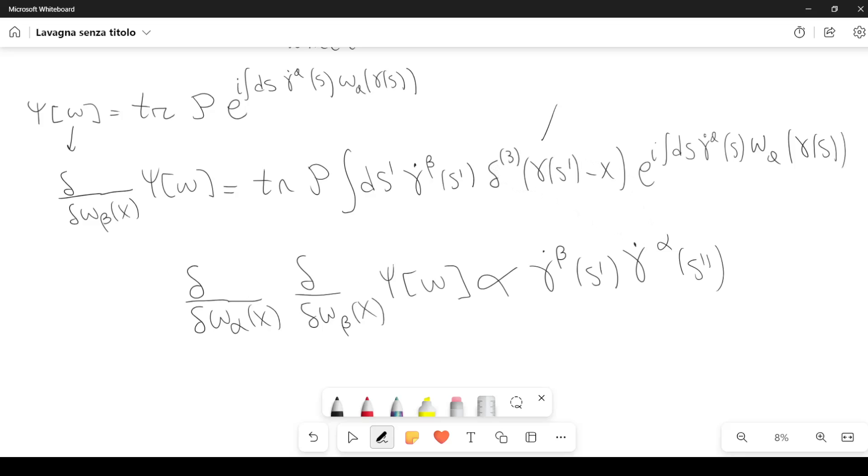But remember that there are some Dirac deltas here, which tell you that we have also another equality, which should be satisfied, which is gamma of s prime equal to gamma of s double prime equal to x. So we have these velocities here, and we have also these equalities.